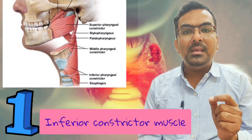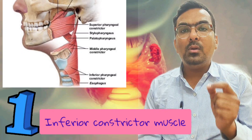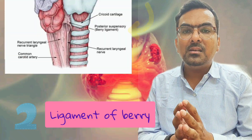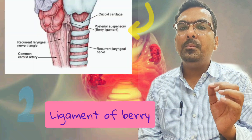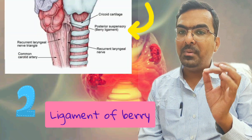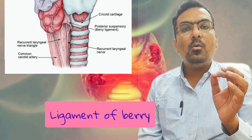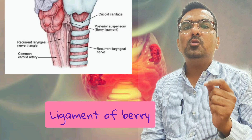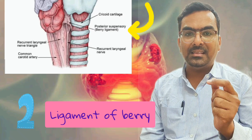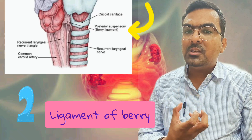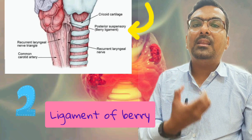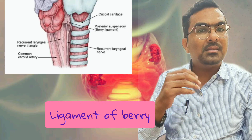The second reason is the ligament of Berry. The pretracheal fascia is condensed posteromedially to form the ligament of Berry, which is attached above to the cricoid cartilage. This fascia is also attached to the trachea and larynx. During deglutition, the up and down movement of the larynx and cricoid cartilage causes the thyroid to move.